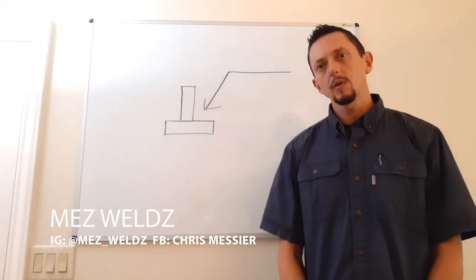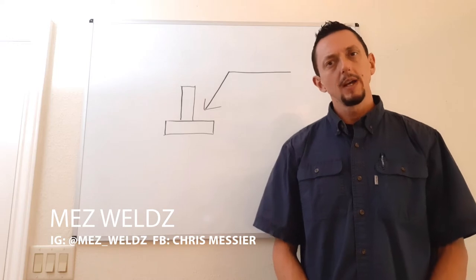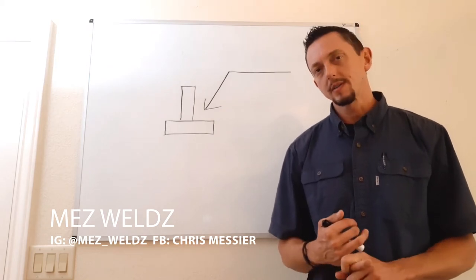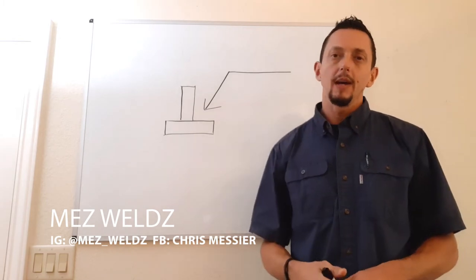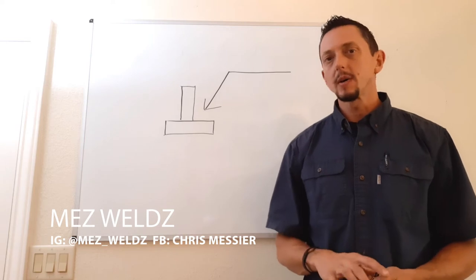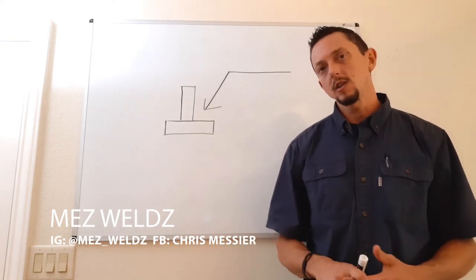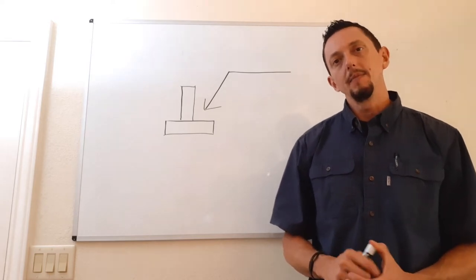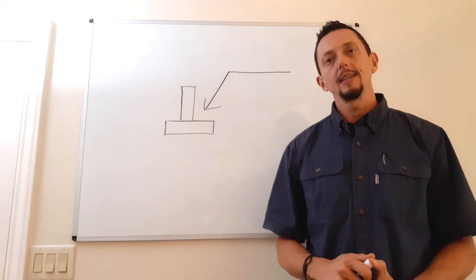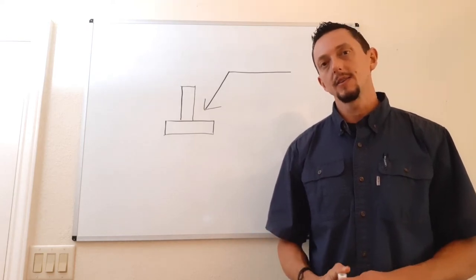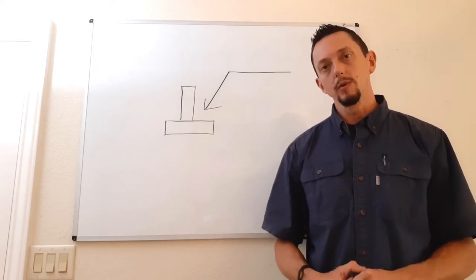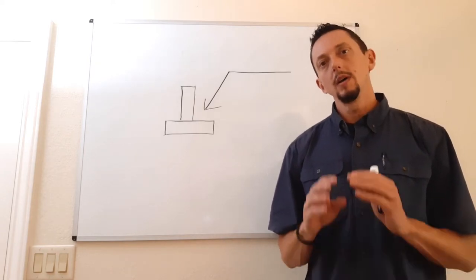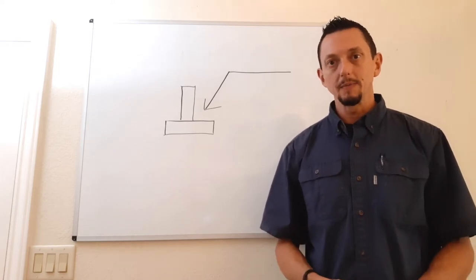Today we're going to do an introductory video on welding symbols. We're going to talk about the basic elements of the system, how everything works, the locations on the actual weld symbol and what they represent. We're mostly going to focus on fillet welds and locations for length and arrangement in this video. We'll get into groove welds in a later video, but the basic elements will pertain to any type of welding symbol.